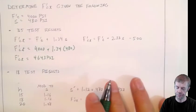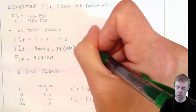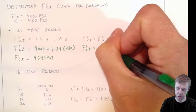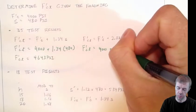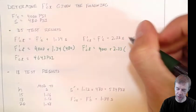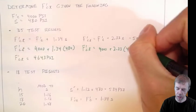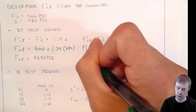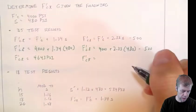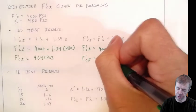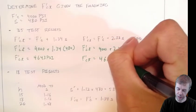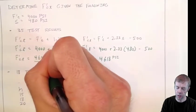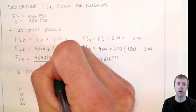And that happens to be equal to 4,643 psi. Now, I've checked my other equation, because it may control. F'C equals 4,000 plus 2.33 times my standard deviation of 480 minus 500. And this is equal to 4,618 psi. So I'd use this one, the larger one.